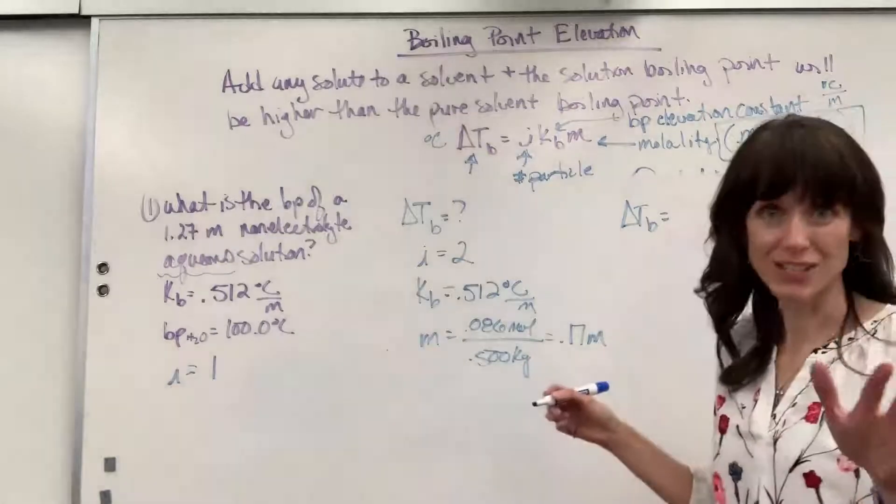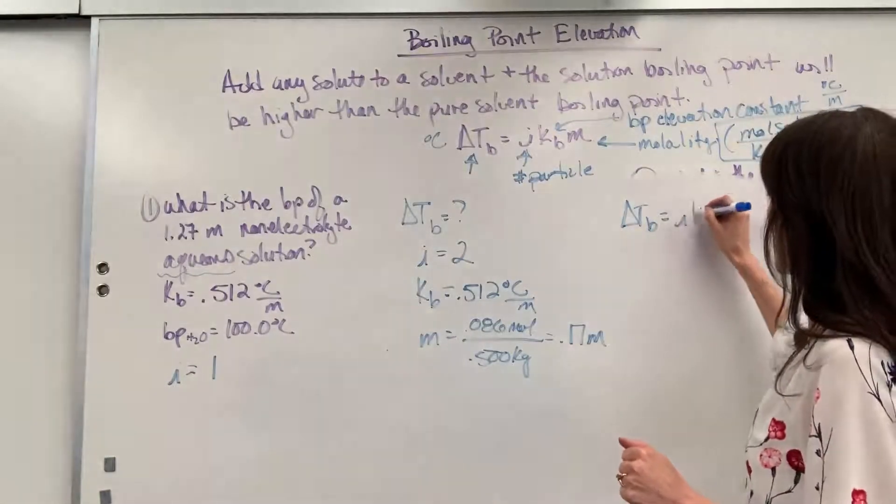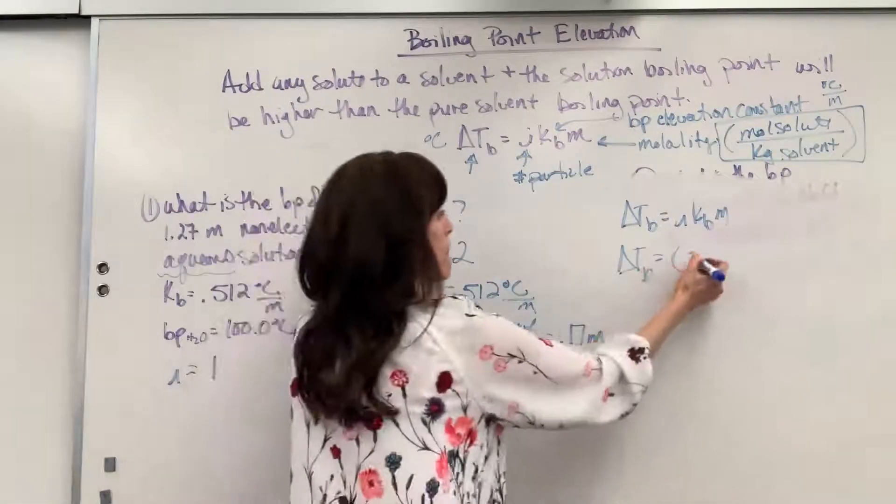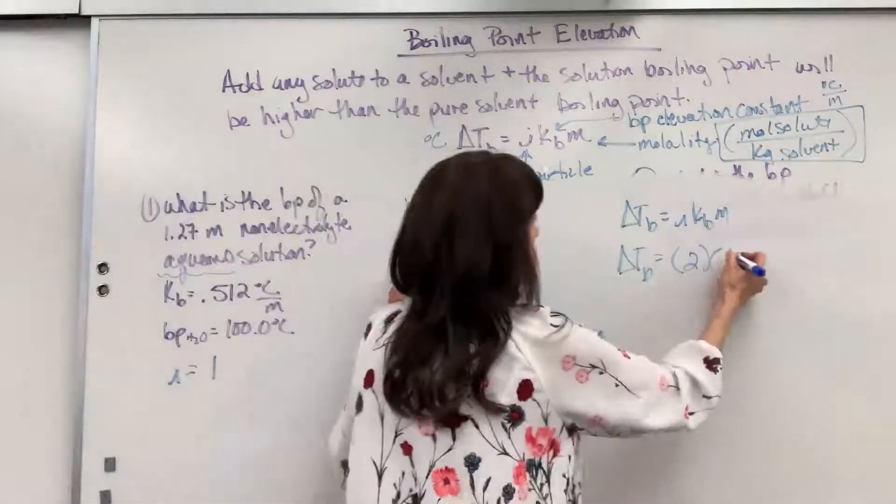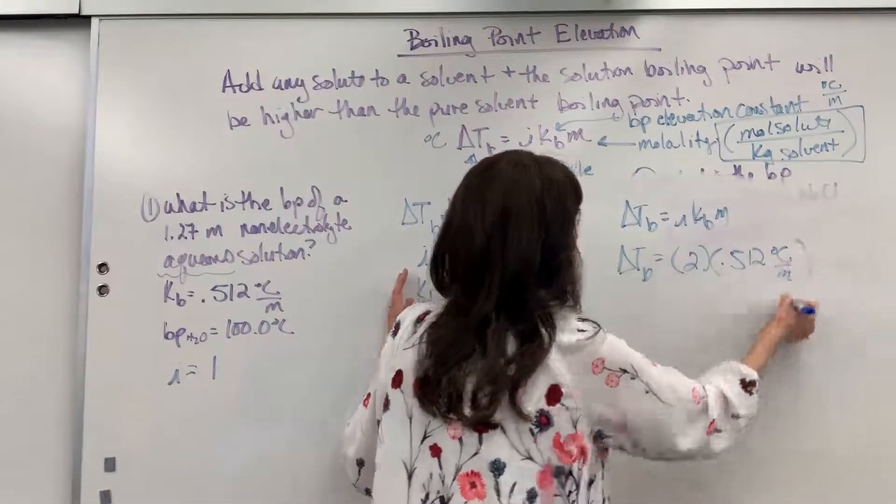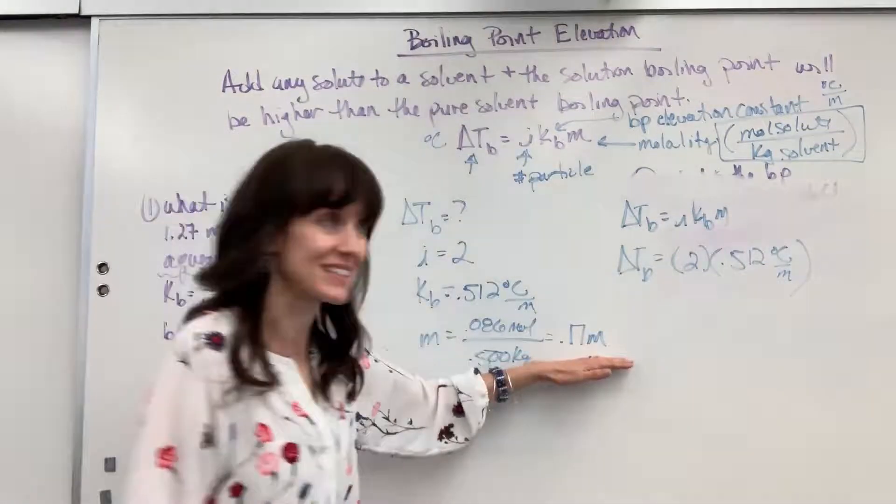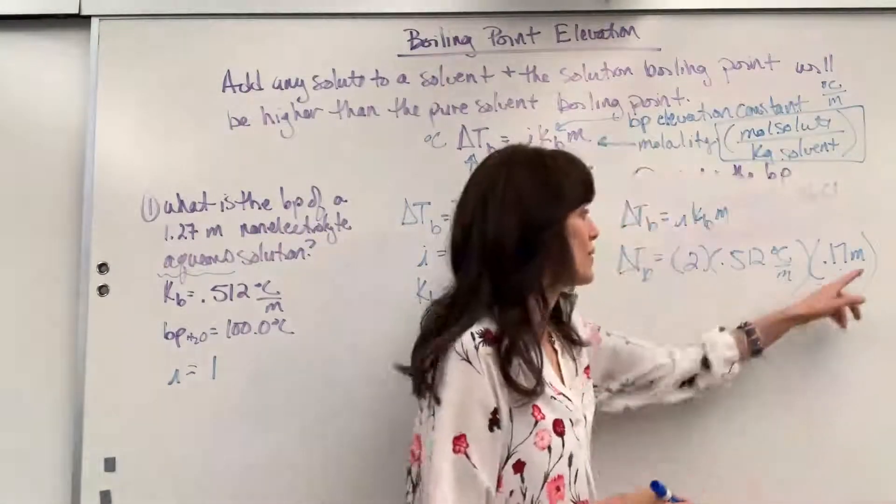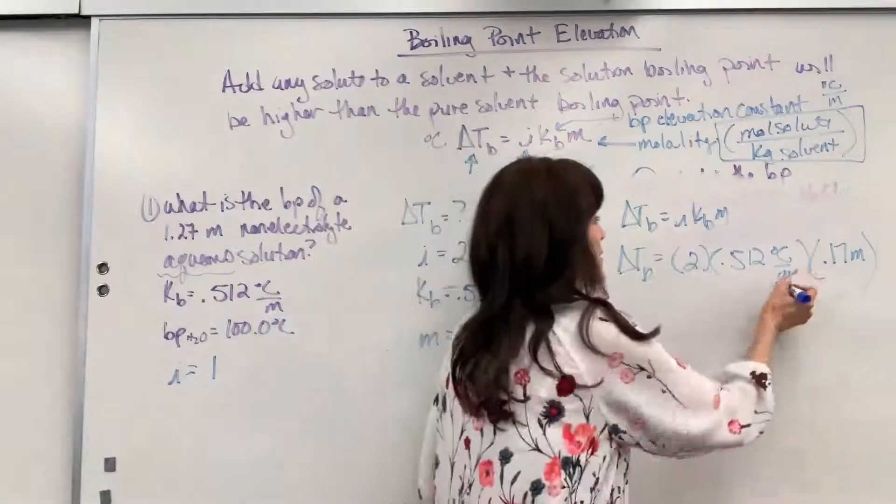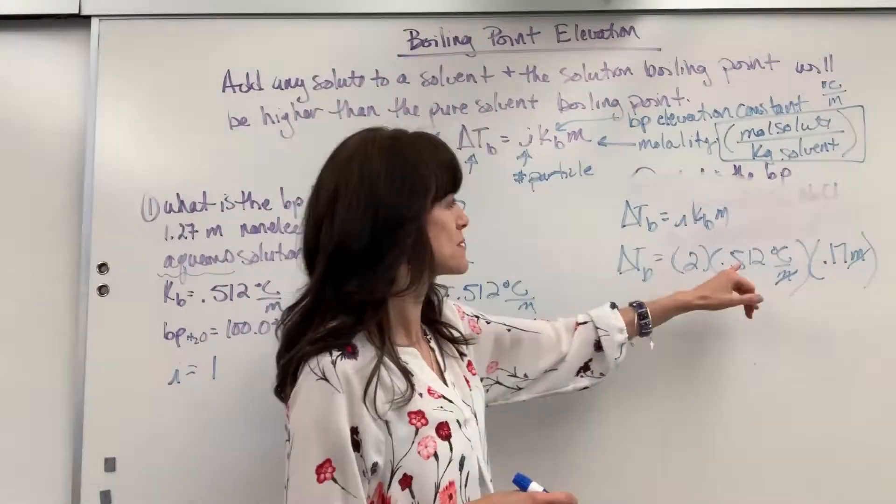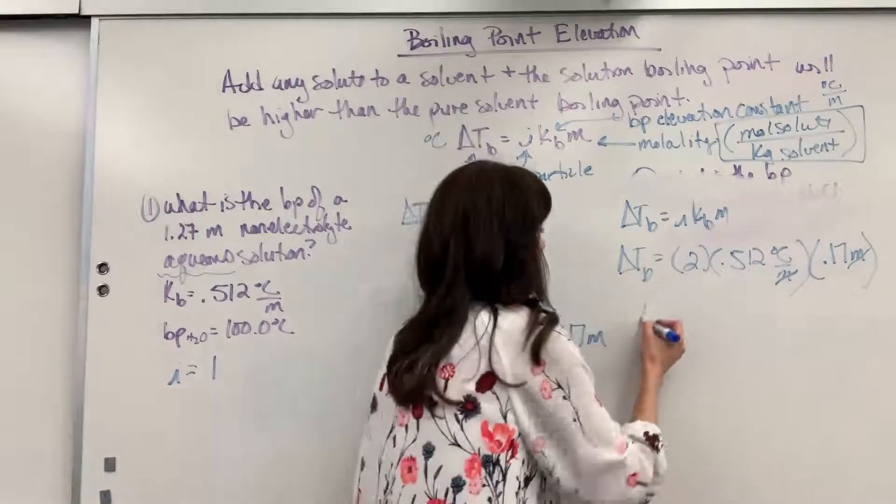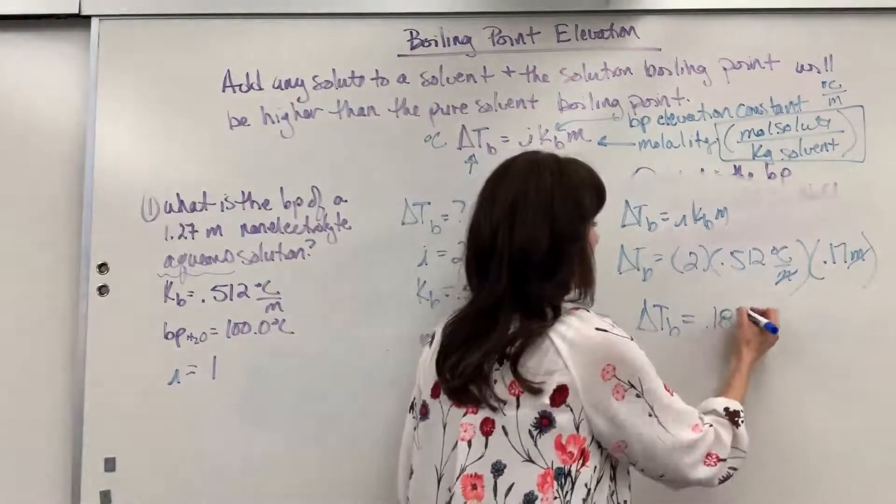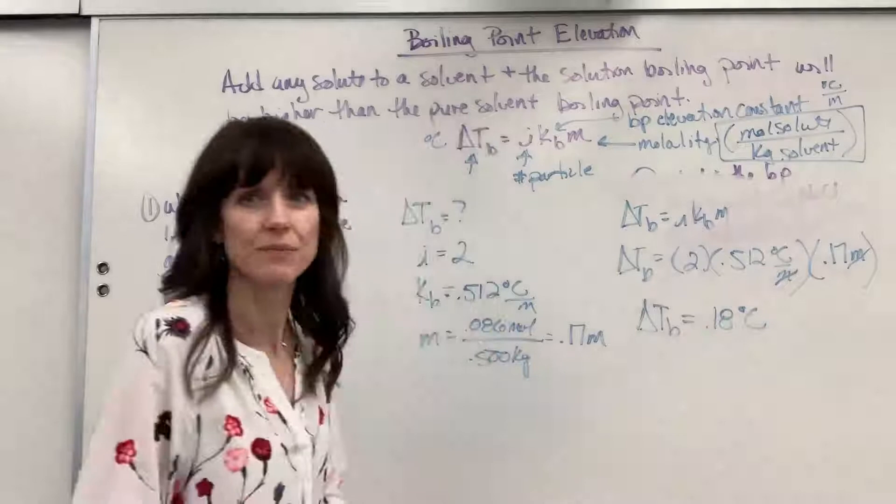So delta T, change in boiling point is going to be I KB times M. Let's put in our numbers. We're going to have two times the KB, 0.512 degrees C per molal, times the molality 0.17 molal. Look at the units - molalities cancel. And so now we will do two times 0.512 times 0.17 and the change in temperature for the boiling point is going to be 0.18 degrees C.